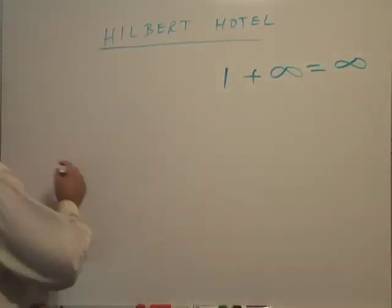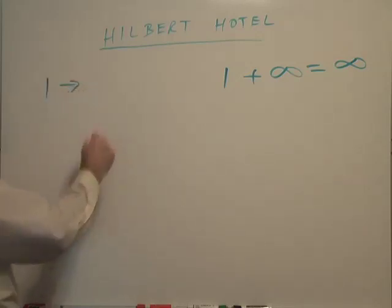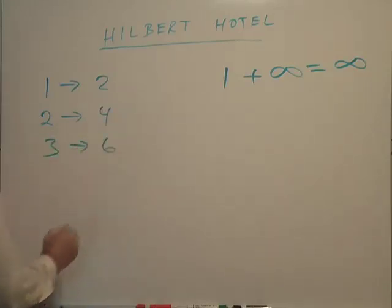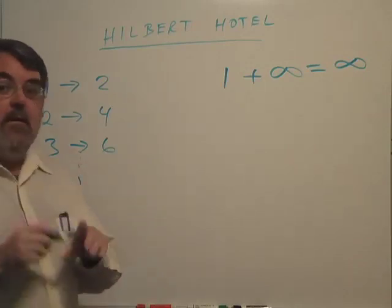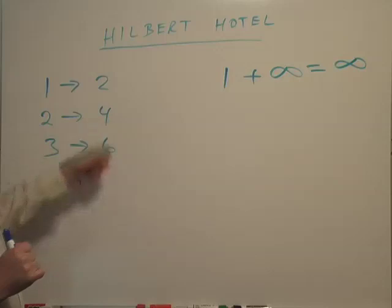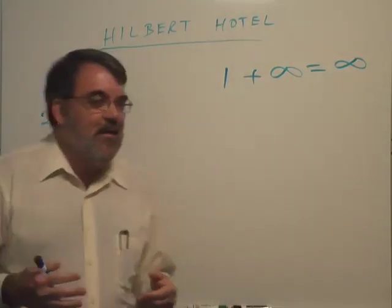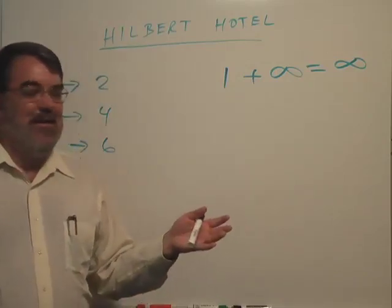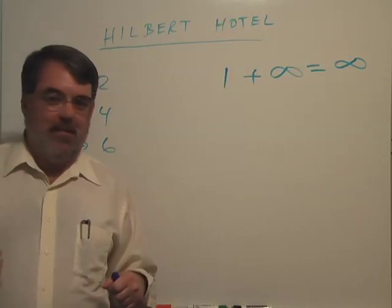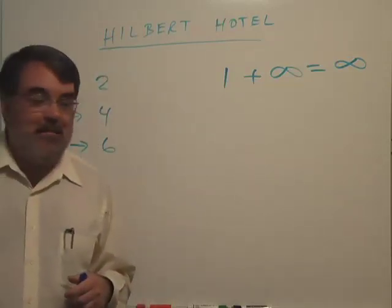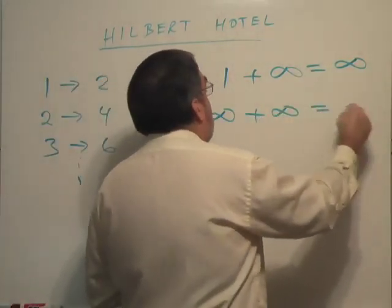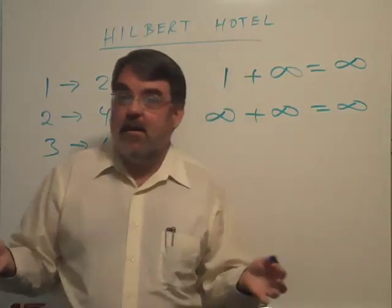The customer comes back and says, 'Can you ask the people in room one to move to room two, room two to move to room four, room three to move to room six, and so on? That way all your current customers will be in even-numbered rooms, and my infinitely many friends can occupy the odd-numbered rooms.' The clerk says, 'That's brilliant!' This illustrates that infinity plus infinity is still infinity.